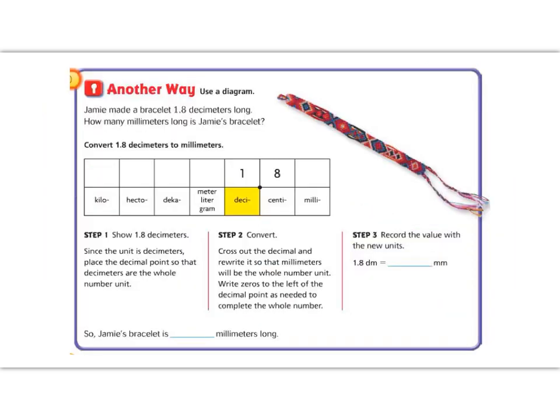Another way. Jamie made a bracelet that is 1.8 decimeters long. How many millimeters long is her bracelet? So you can see here in the diagram that it starts in decimeters, and it is 1 decimeter and 0.8 centimeters. But we need to know how many millimeters that is.